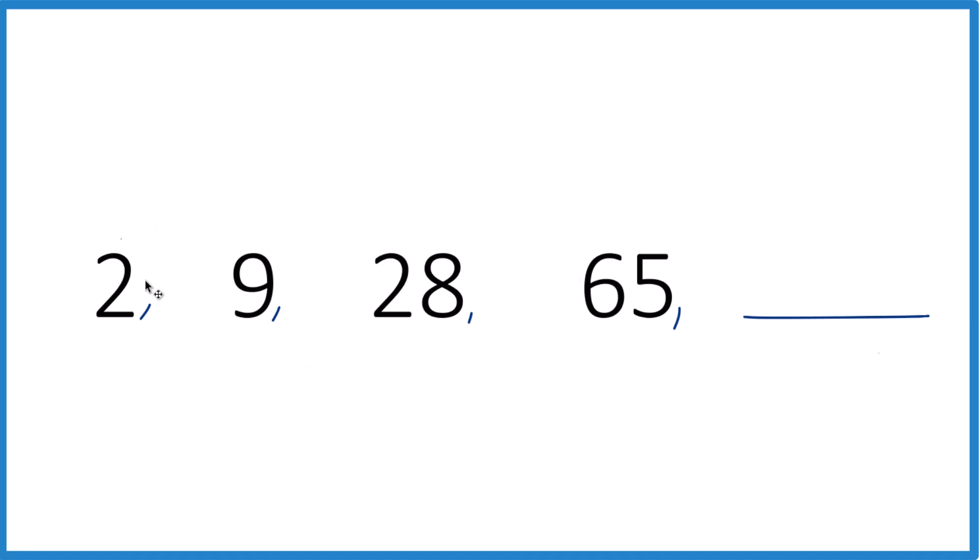Usually what I'll do with these is try to figure out what's the difference between these numbers. Maybe find a pattern. So 2 plus 7 is 9, 9 plus 19 is 28, 28 plus 37 is 65. I don't really see much of a pattern here.